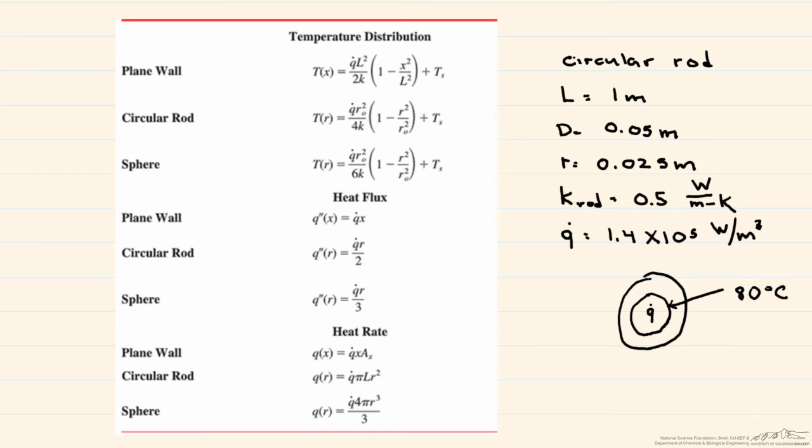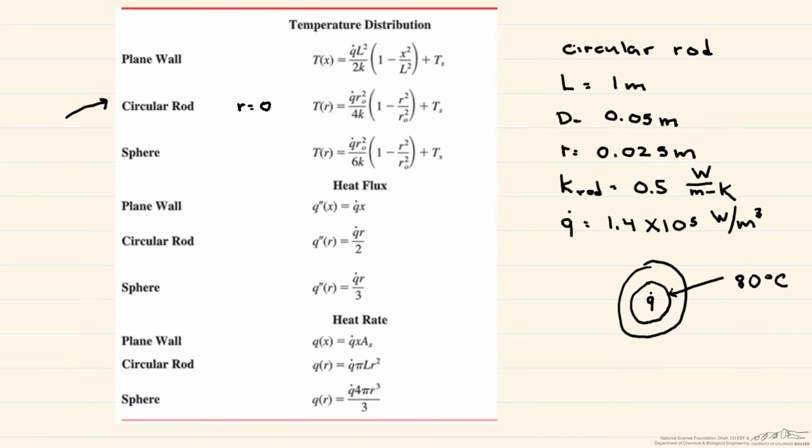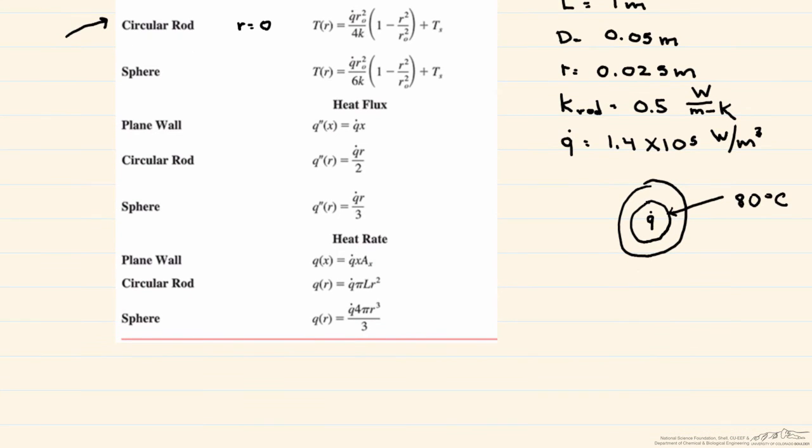So now let's go to our appropriate temperature distribution. So we want here a circular rod, and we're looking at it at r equals zero. So let's write that out for our problem. Our T at zero is going to be that generation term times that outside radius of our rod squared divided by 4.